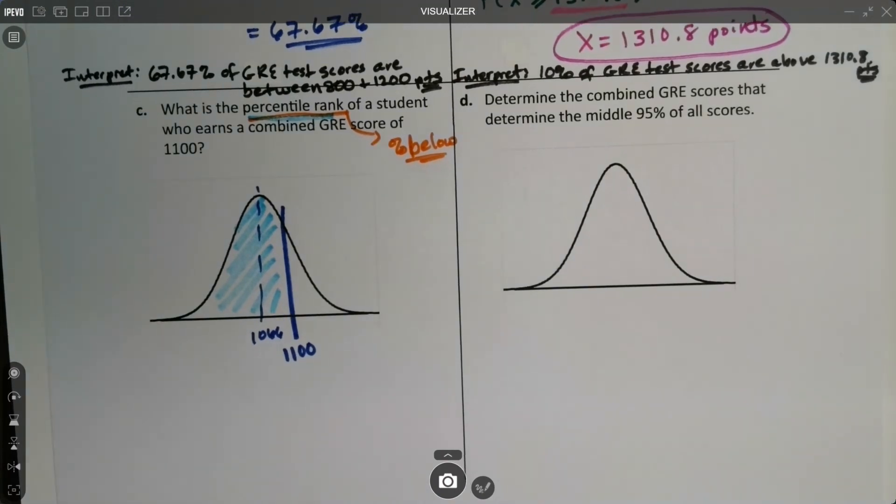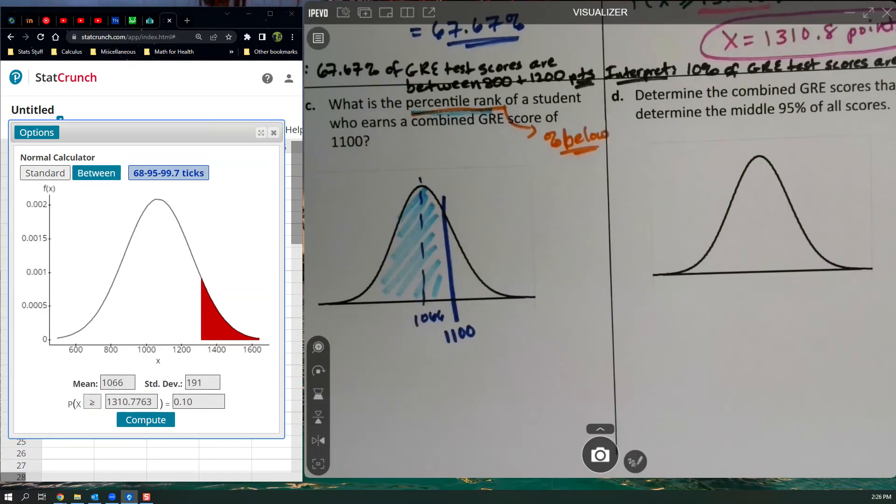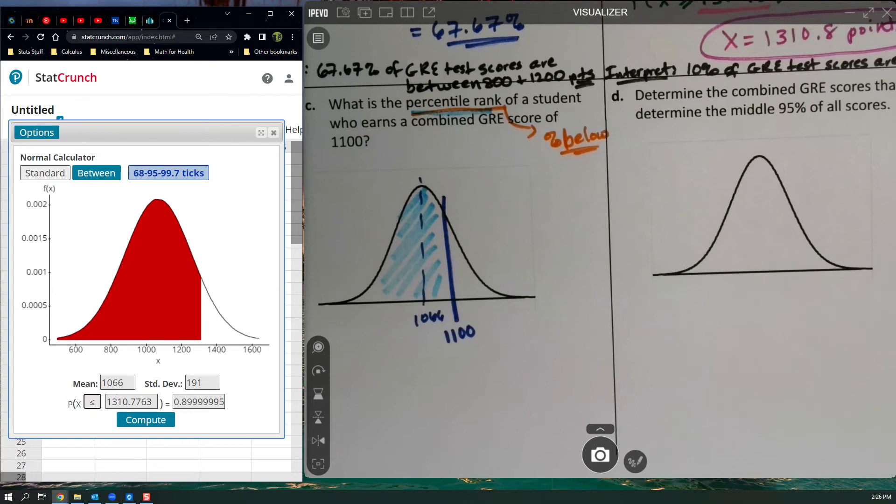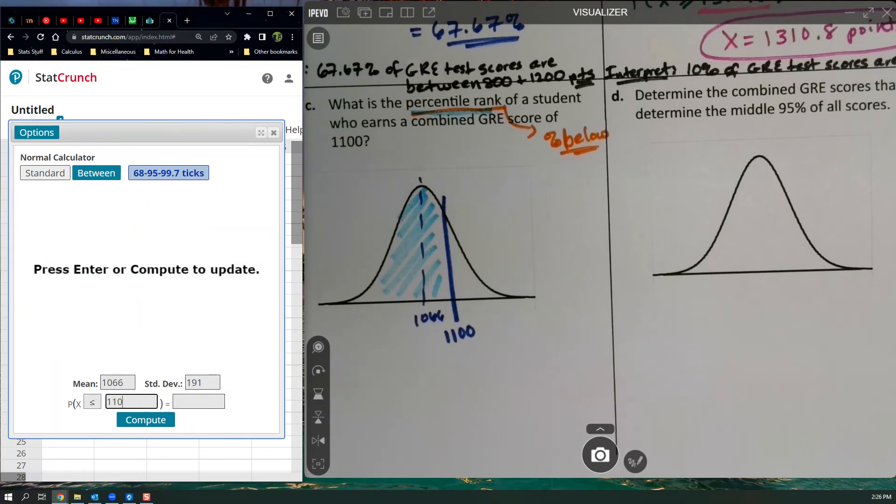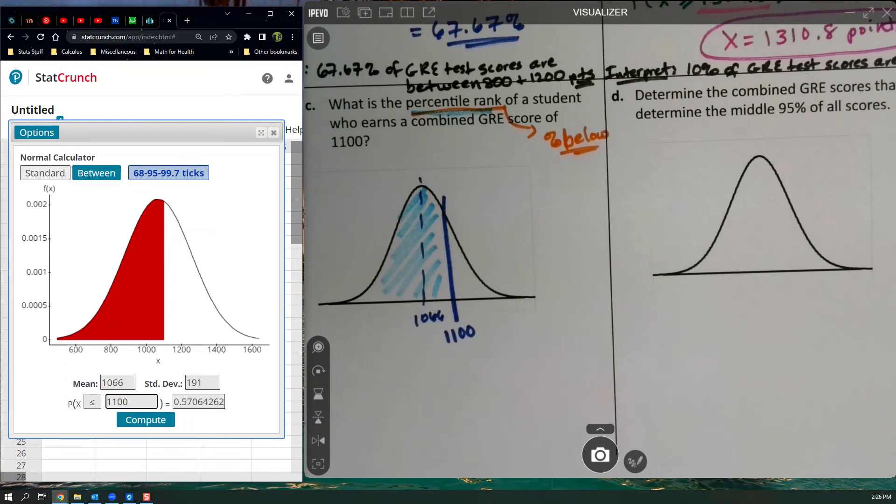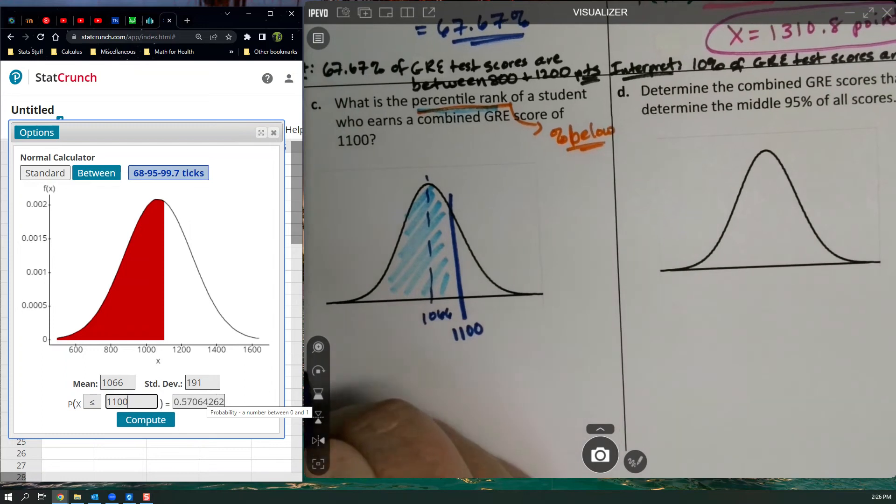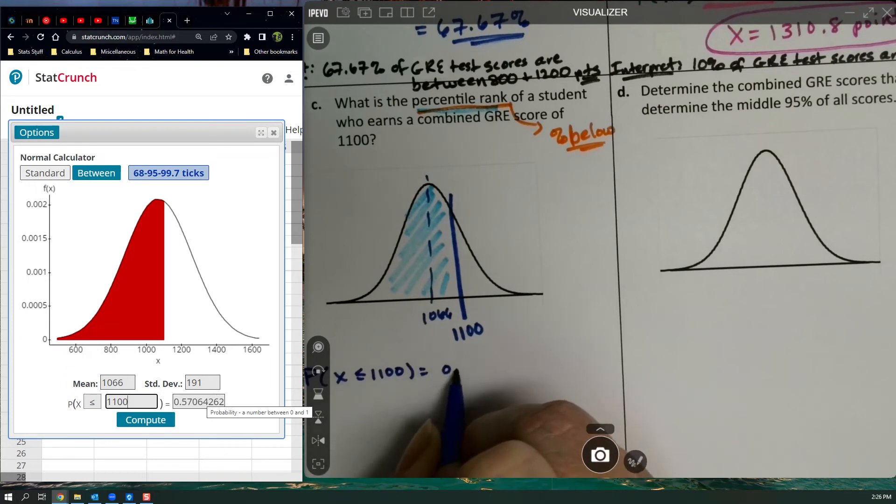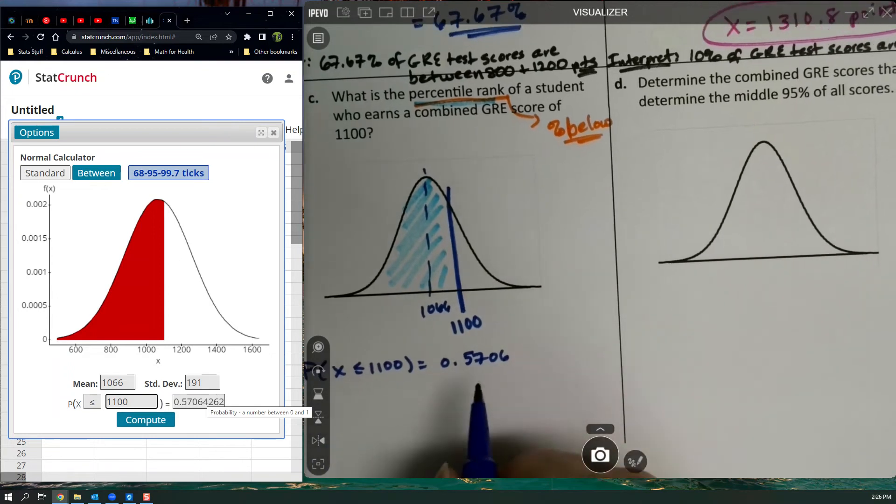So then let's think here. I need to find this area. I need to know what this is so I can make it into a percentile. So let me go back to my handy dandy StatCrunch. I'm going to switch it to a less than. And I want it to be 1100. I don't know the area. The area is unknown to me, but I know the X value is 1100 points. There you have it. 0.5706. So the probability that X is less than or equal to 1100 is 0.5706, which we would round up.